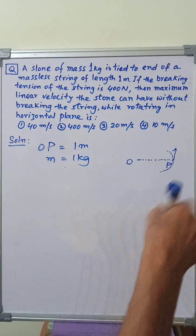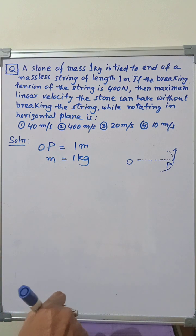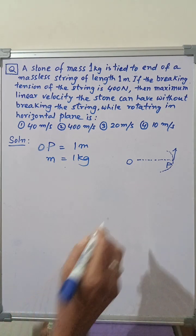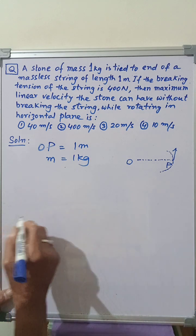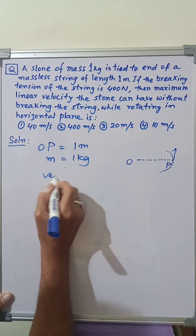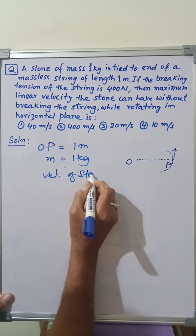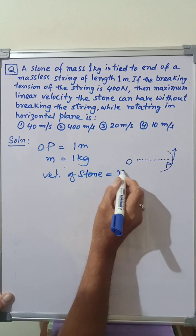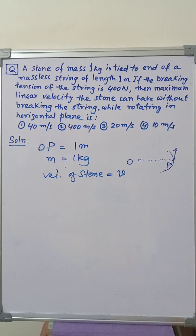The stone is rotating in the horizontal plane. Let the linear speed of the stone in the horizontal plane be equal to V. So, let us write velocity of stone is equal to V. Therefore, the necessary centripetal force...